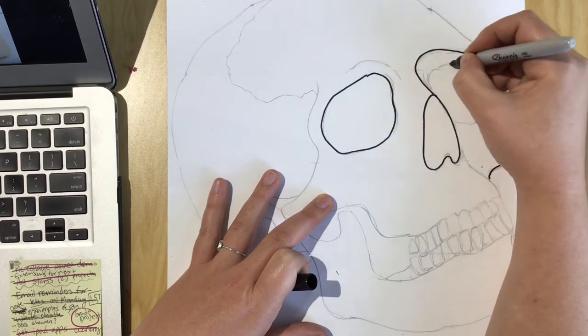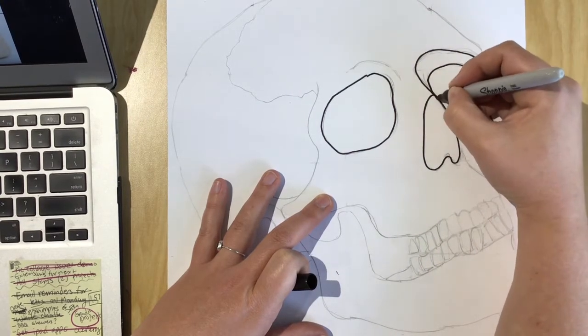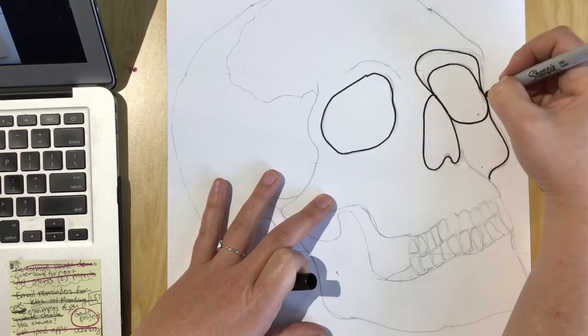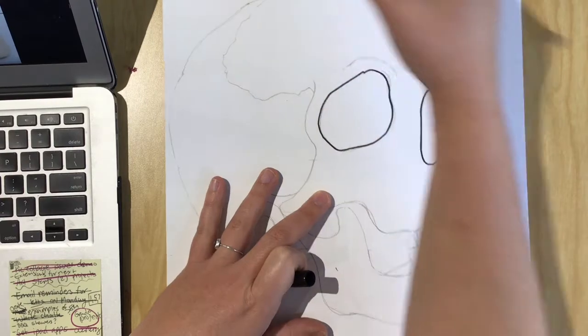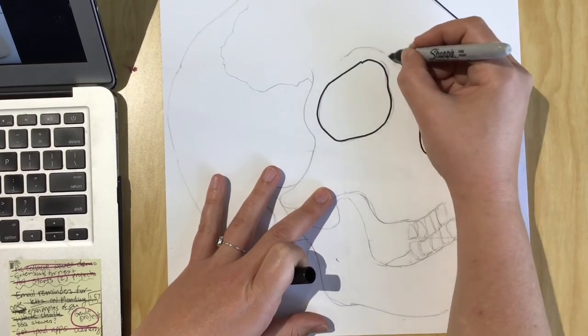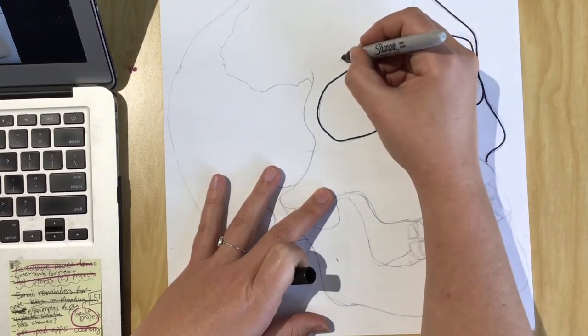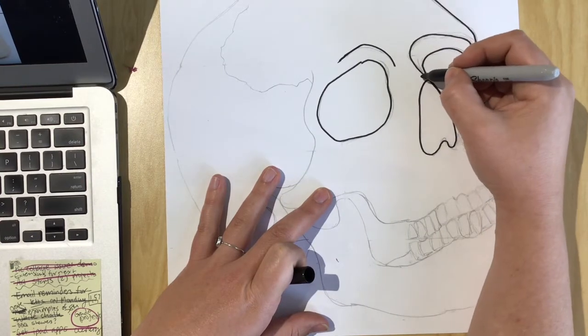And so we need to make sure we fill our drawing with something that's not going to bleed when it gets wet. So you don't want to use just regular marker. You want to make sure that you have the Sharpies that were in your art kit.